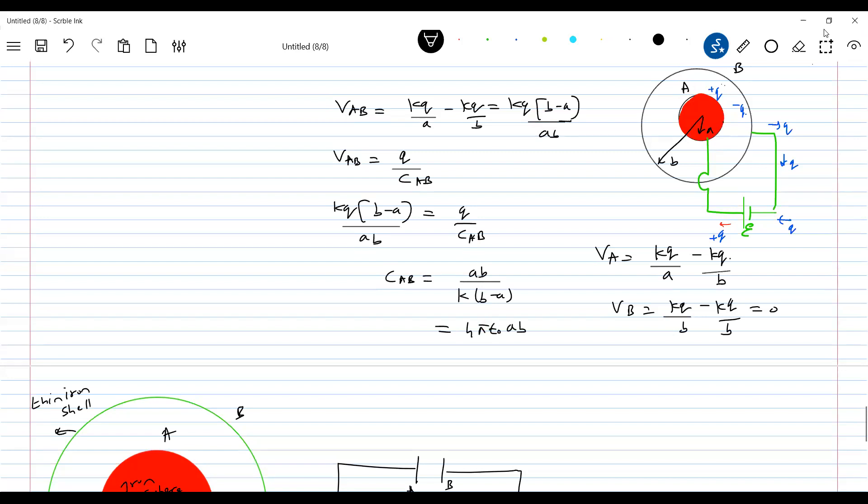So whenever two shells are there, concentric shells, what is the capacitance between them? Just equal to this much. There's a background, there's an initial. It's very important. This is everywhere I'll be using this concept only. Between two consecutive shells, the capacitance is given by this particular formula. So if I vary the applied EMF, capacitance depends on physical parameters, not on the applied EMF.